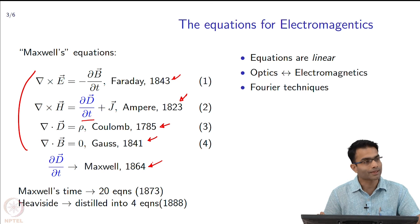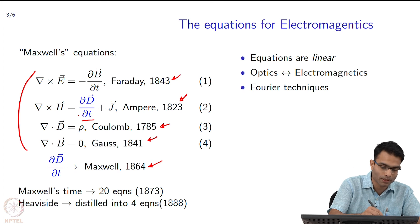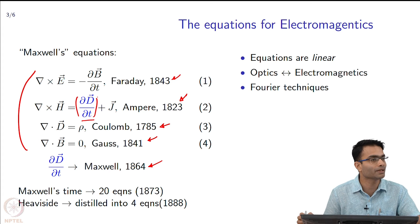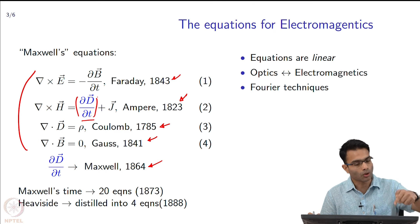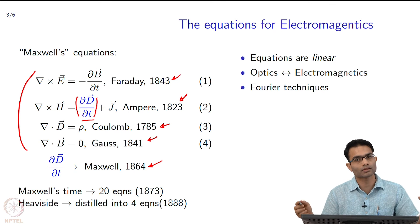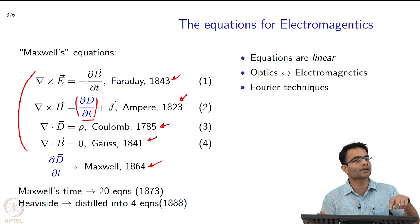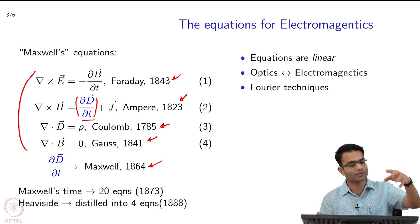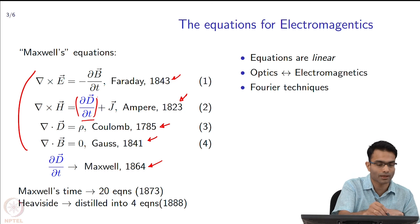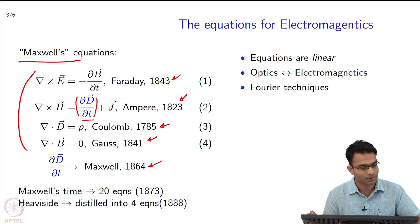That inconsistency actually is simple enough for us to see and we will have that as a problem in the homework. That inconsistency was fixed by him when he added this one term, the ∂D/∂t, the displacement current term. When he adds this term to it, all of these 4 equations become consistent and the unification of electricity and magnetism happens.